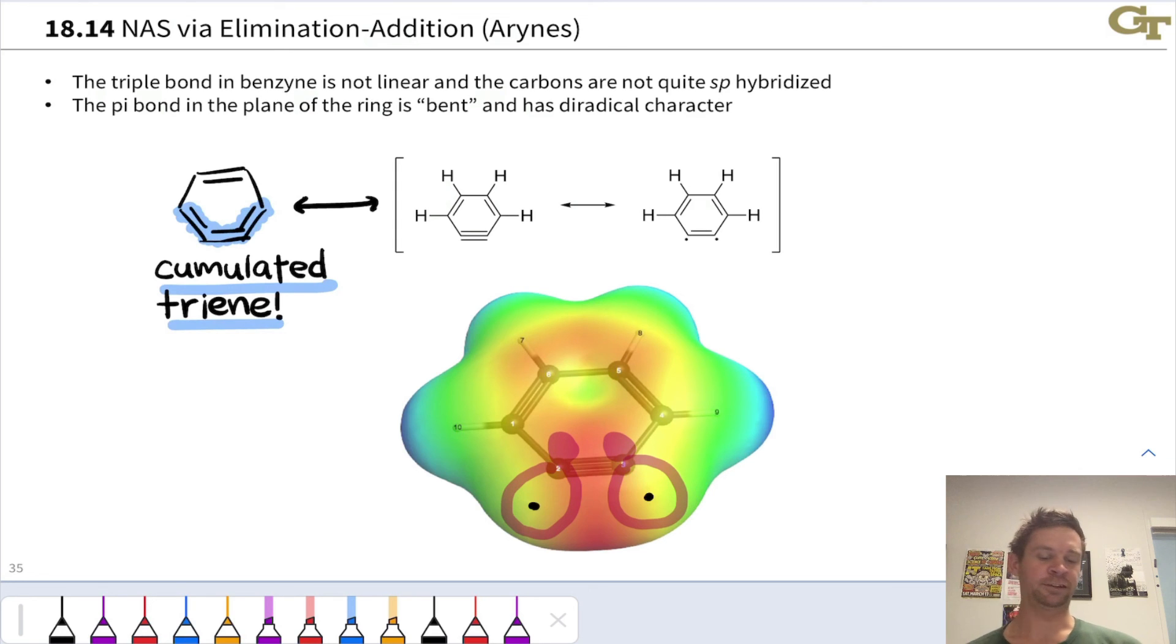Even so, though, this electron density map shows us that the bulk of the electron density in benzyne is near the triple bond and so these electrons are highly reactive and although this doesn't exactly do it justice, we can add nucleophiles into either of these carbons as well.